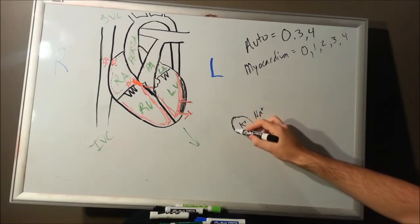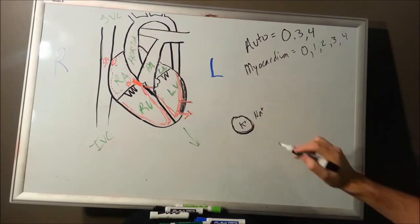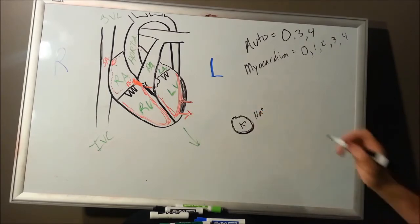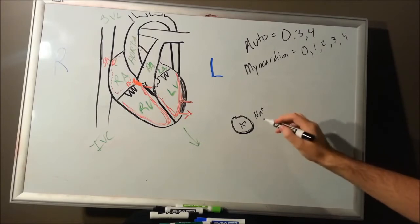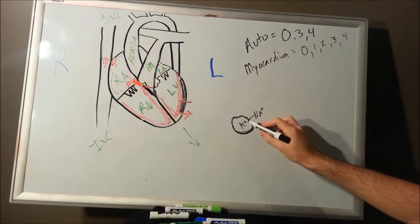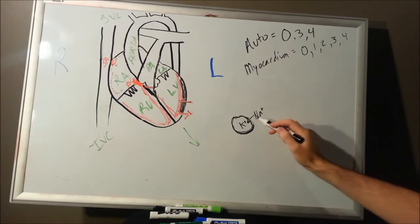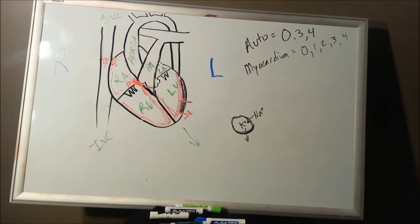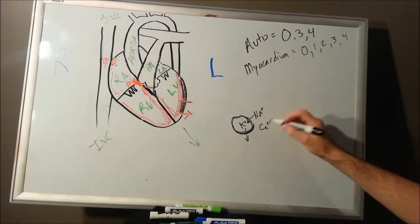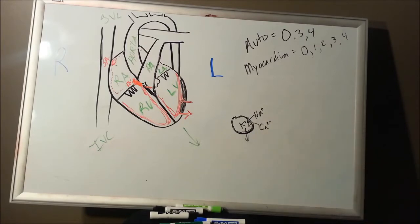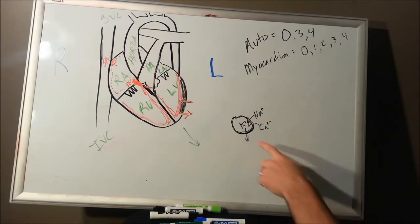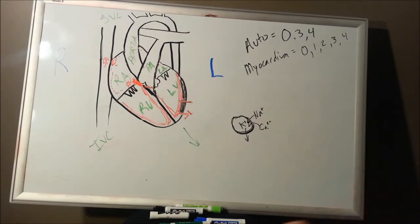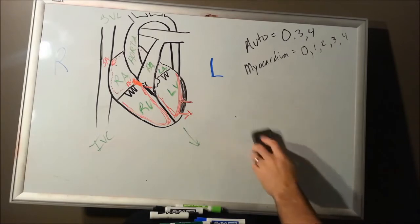The myocardium — if this is a myocardial muscle cell — is going to have this ion gradient. Once that action potential reaches it, it's going to depolarize: sodium is going to come in, potassium is going to come out, and we're also going to have a little calcium come in. The key difference is this kind of cell cannot — I repeat, cannot — come up with its own action potential in most situations.